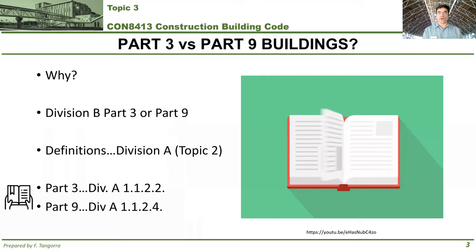You find them under Article 1.1.2.2 for Part 3 buildings and under Article 1.1.2.4 for Part 9 buildings. Anyways, let's learn about this — how do we distinguish between a Part 3 building and a Part 9 building?